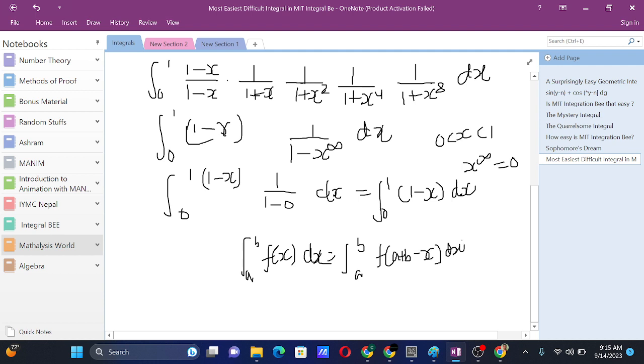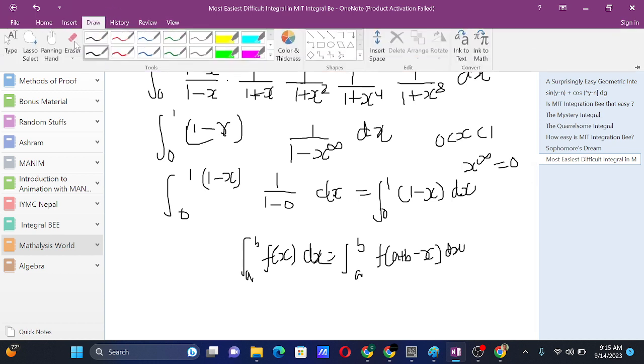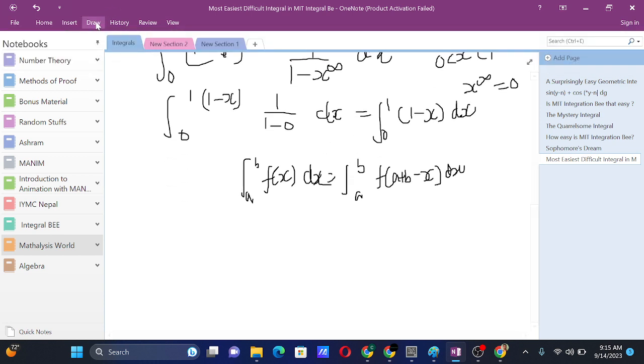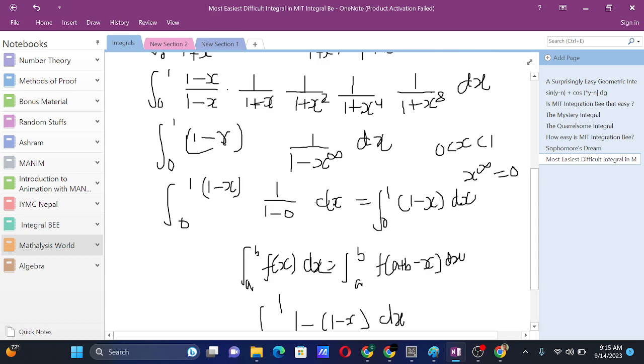So if you use King's rule, it will be further simplified to integral from 0 to 1 of (1 minus (1 minus x)) dx, which is just integral from 0 to 1 of x dx. Now x dx we all know is x square by 2, from 0 to 1, so that's just 1 by 2.